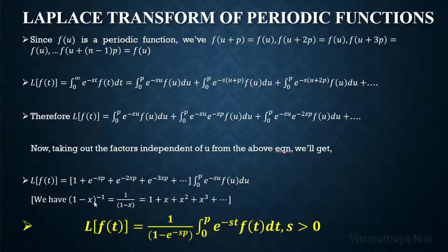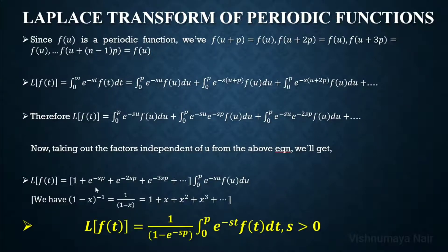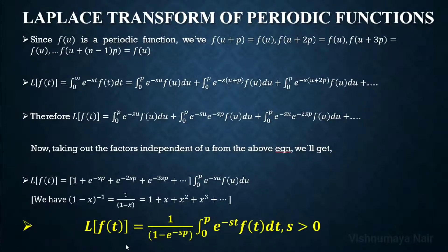We know that 1 minus x raised to minus 1, which equals 1 over 1 minus x, equals 1 plus x plus x squared plus x cubed plus etc. If we consider x as e raised to minus sp, then the series 1 plus e raised to minus sp plus e raised to minus 2sp plus etc. is the expansion of 1 over 1 minus e raised to minus sp. Therefore, the Laplace transform of f of t equals 1 over (1 minus e raised to minus sp) times the integral from 0 to p of e raised to minus st times f of t dt. This is the Laplace transform of a periodic function.